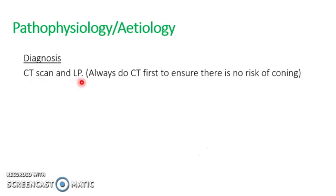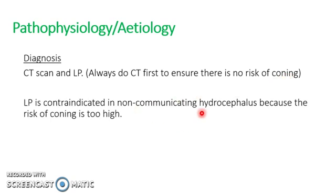For diagnosis, do a CT scan and a lumbar puncture. Do a CT first to ensure that there's no risk of coning. Coning is the migration of the cerebellar tonsils into the foramen magnum, causing brainstem compression and therefore death. It must be avoided and therefore checked for. If the brain has shifted due to increased pressure in the ventricles, the lumbar puncture is contraindicated, because it makes the shift worse and pulls the cerebellar tonsils down, causing coning — and it's fatal. In non-communicating hydrocephalus, this is a contraindication because the risk is too high.